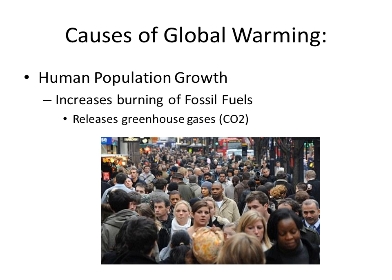The main cause of global warming, from which all the other causes come, is human population growth. Human population growth does a lot of things, but one of the things we do as a society is we use a lot of fossil fuels. Fossil fuels release greenhouse gases, like carbon dioxide, that help trap heat in the atmosphere. And when you trap heat in the atmosphere, you end up warming the Earth.